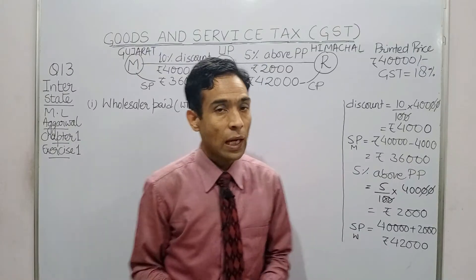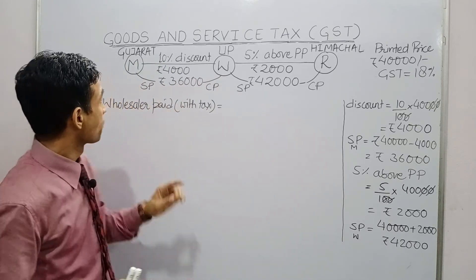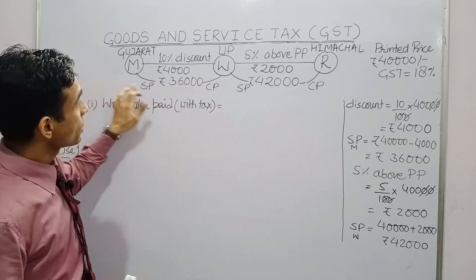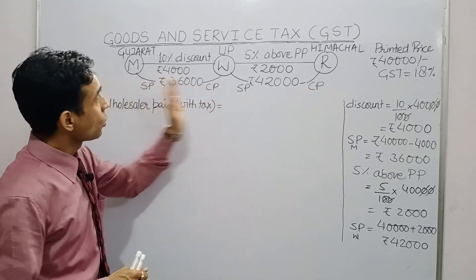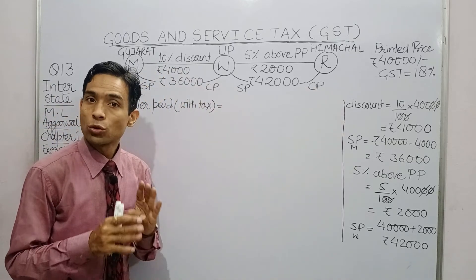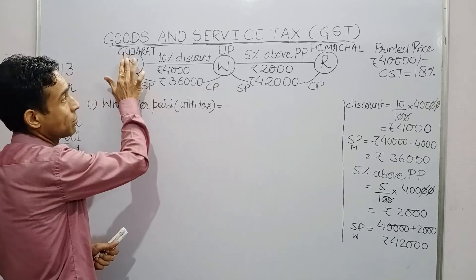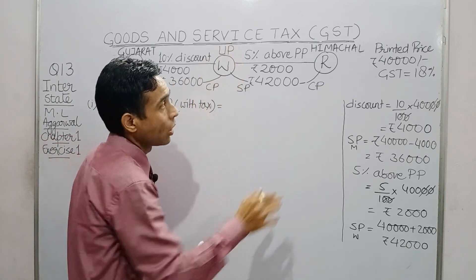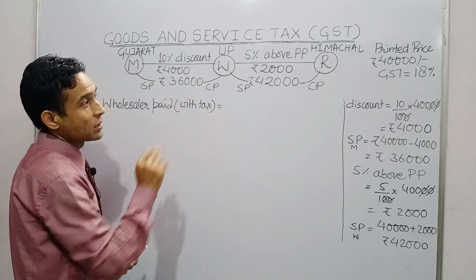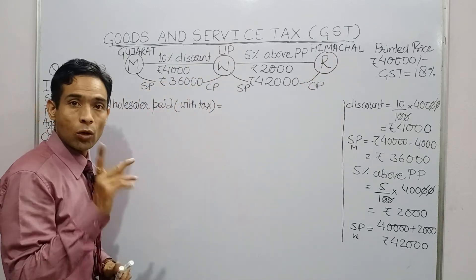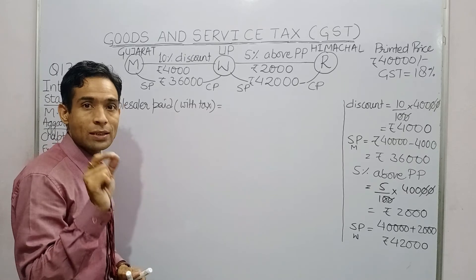Here I have made the transaction chain: manufacturer → wholesaler → retailer, across three different states. This is an interstate question. Manufacturer is in Gujarat, wholesaler in UP, and retailer in Himachal. GST rate is 18 percent. In interstate cases, the total tax goes to the center as IGST.